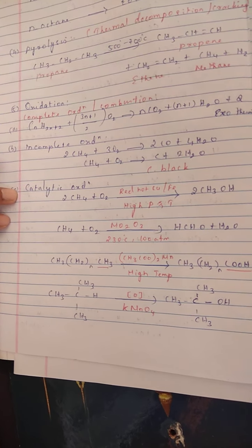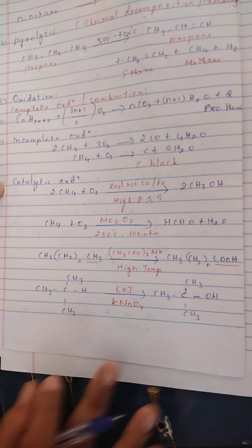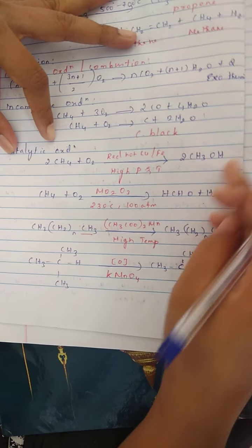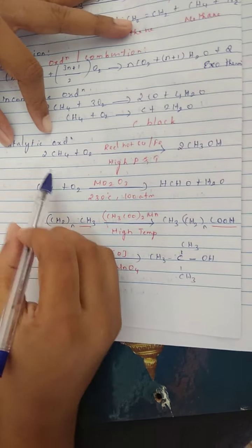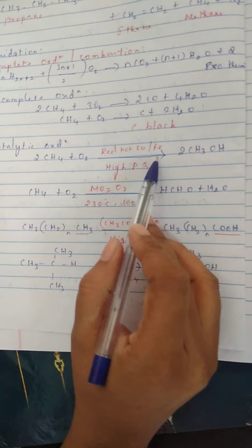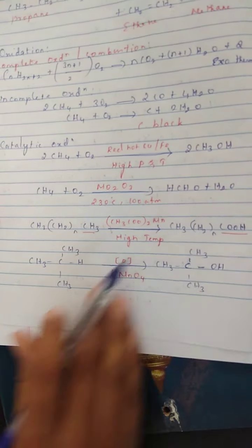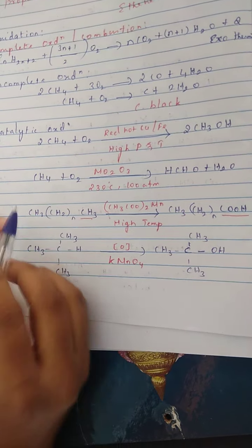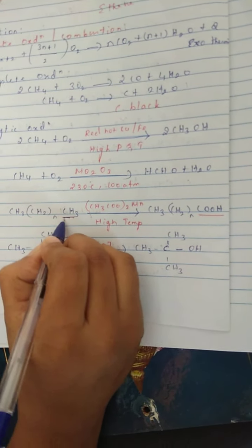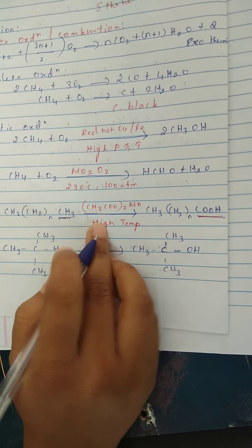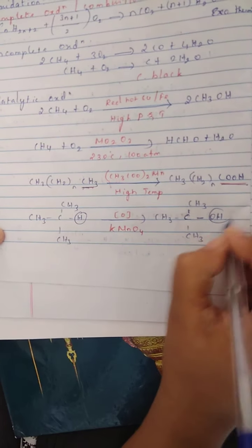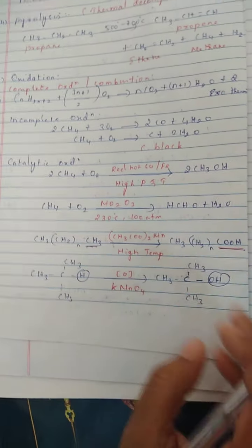Catalytic oxidation is an important concept. If you use specific catalysts, we get specific products. Here I am taking alkanes alone. Using various catalysts, I get alcohol, aldehyde, and acid as different products. Methane undergoes oxidation in presence of red-hot copper or iron at high pressure and temperature to give methanol. Methane is converted into formaldehyde in presence of molybdenum trioxide. The methyl group is converted into COOH in presence of manganese acetate. A tertiary carbon of alkane has its H converted into OH in presence of KMnO4 as a strong oxidizing agent.